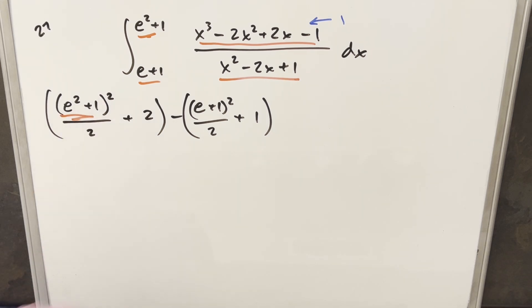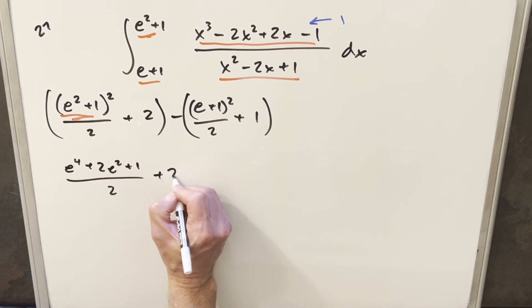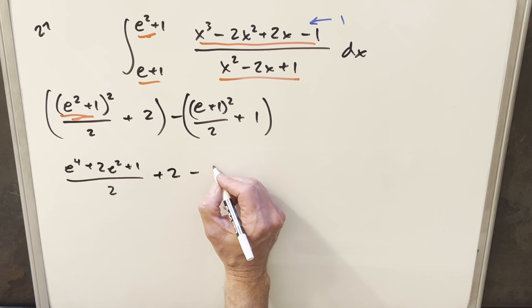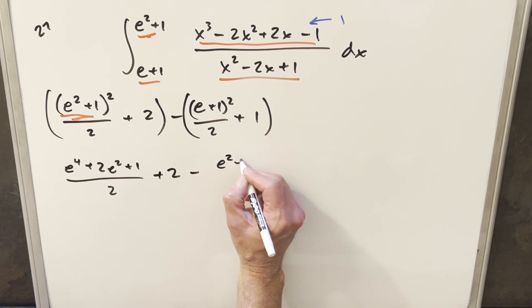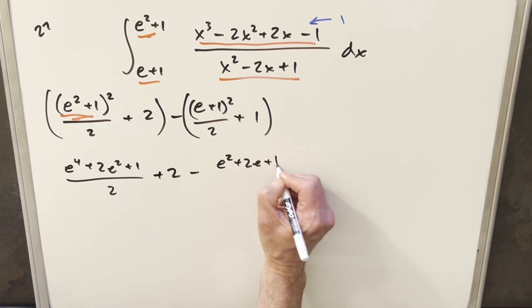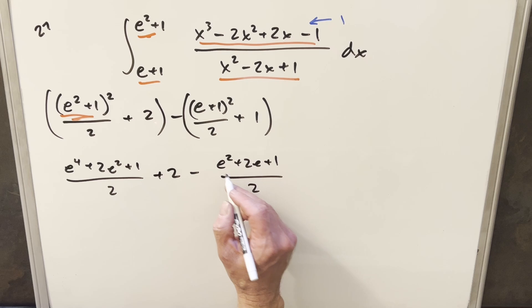I'm going to square this out, and we're going to have here, this is going to become e to the fourth plus 2 e squared plus 1 over 2, just the plus 2 here, then minus, this is going to be, squaring this out, this is going to become e squared plus 2 e plus 1 over 2, and distributing minus to the plus 1, this is just going to be a minus 1.